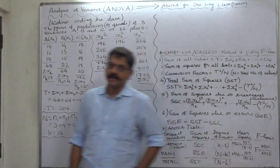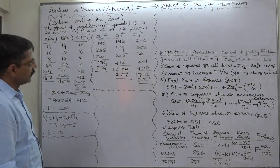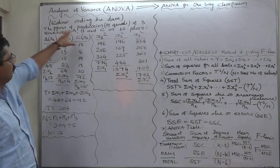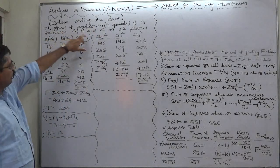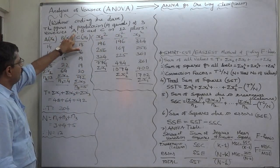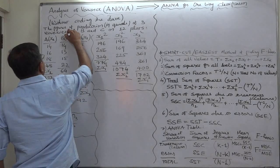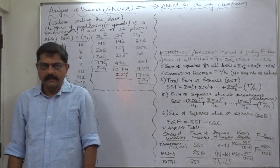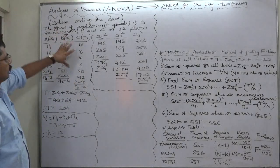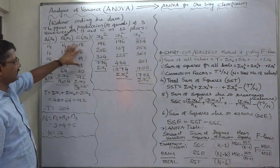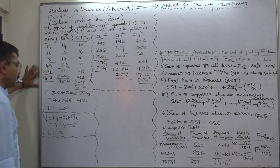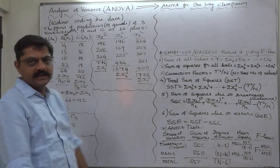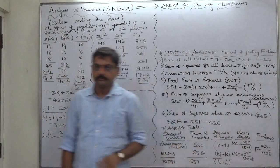Hello, namaskar. Welcome. We are doing analysis of variance, and now we are with a case of one-way classification. We are going to solve this problem without coding the data. The figures show production in quintals of three varieties of wheat A, B, and C on twelve plots of land. Variety A was sown on three plots, B on four plots, and C on five plots, so the sample sizes are not equal.